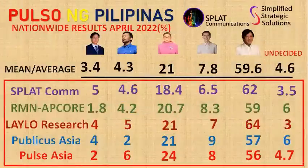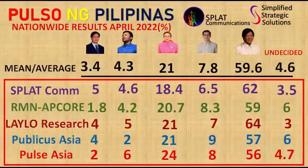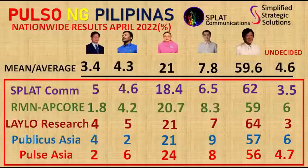Let us now look at the comparison of survey results for the month of April from five different organizations. Kindly focus on the chart enclosed in the red rectangle, and shift focus to the topmost row — this is the mean or average of the preference shares from these five survey organizations. This comparison is based on a layman or simplistic form of comparison; no consideration was given to differences in sample size, margin of error, and methodologies.